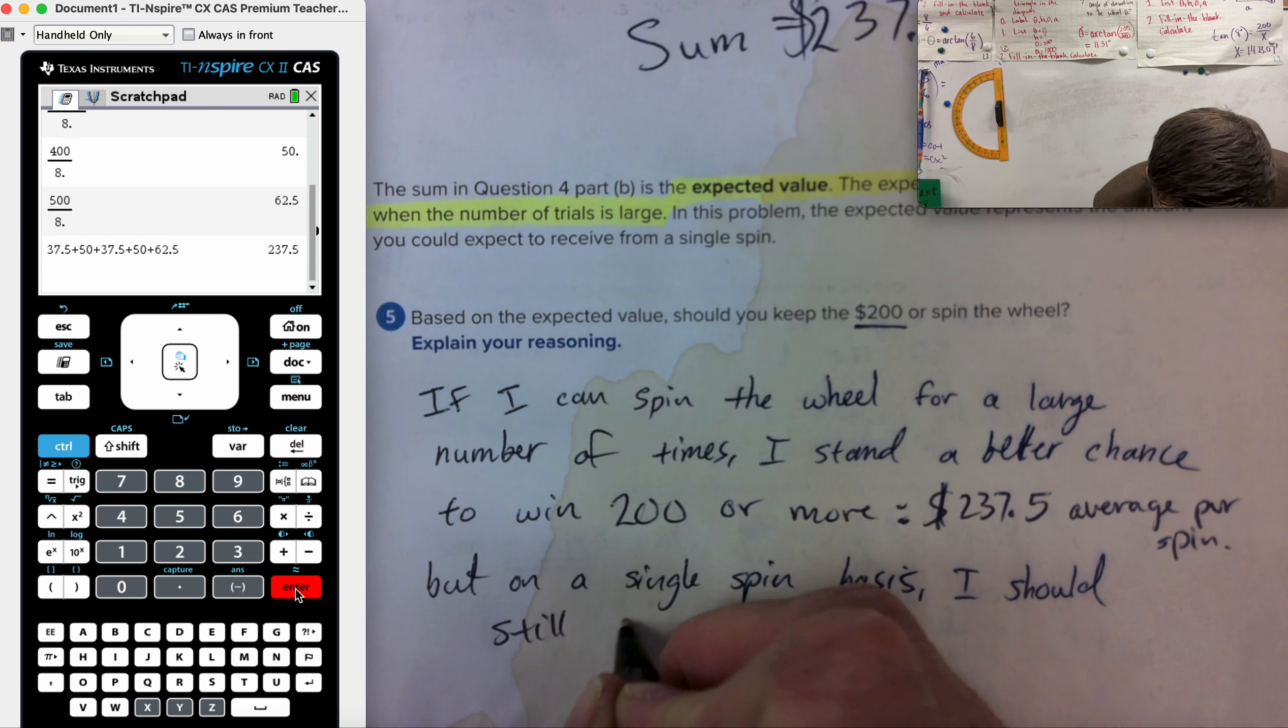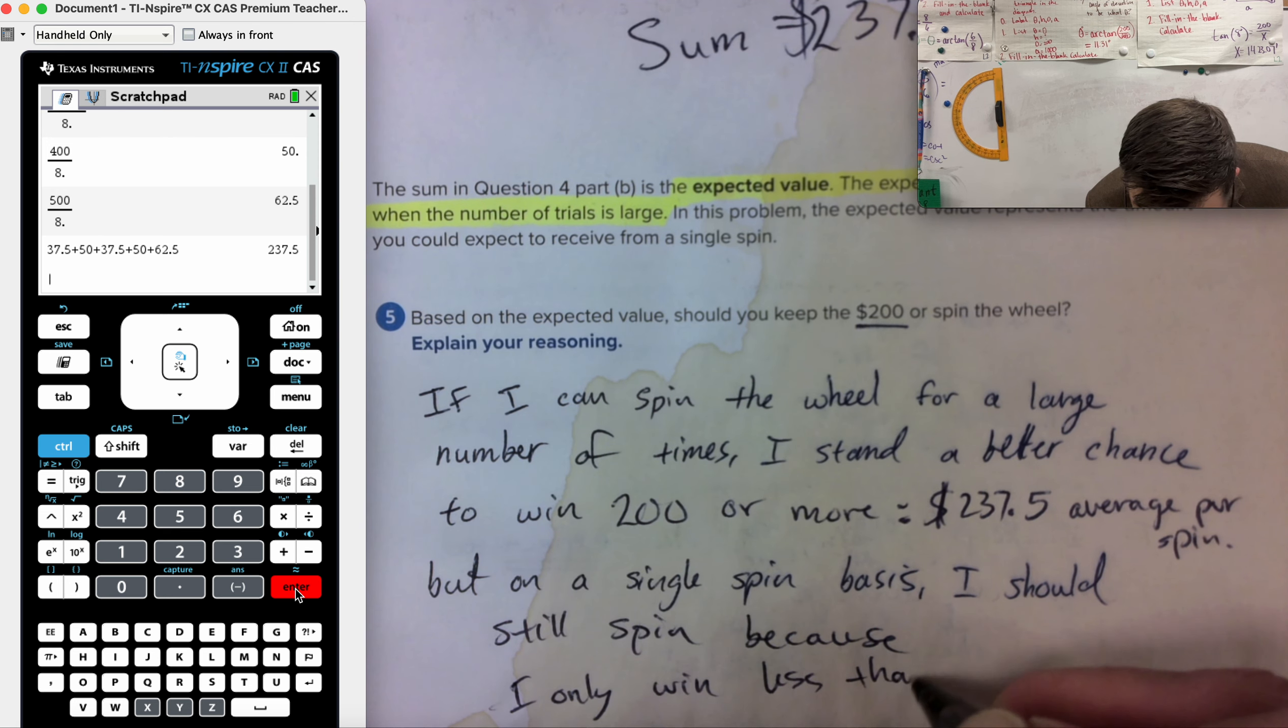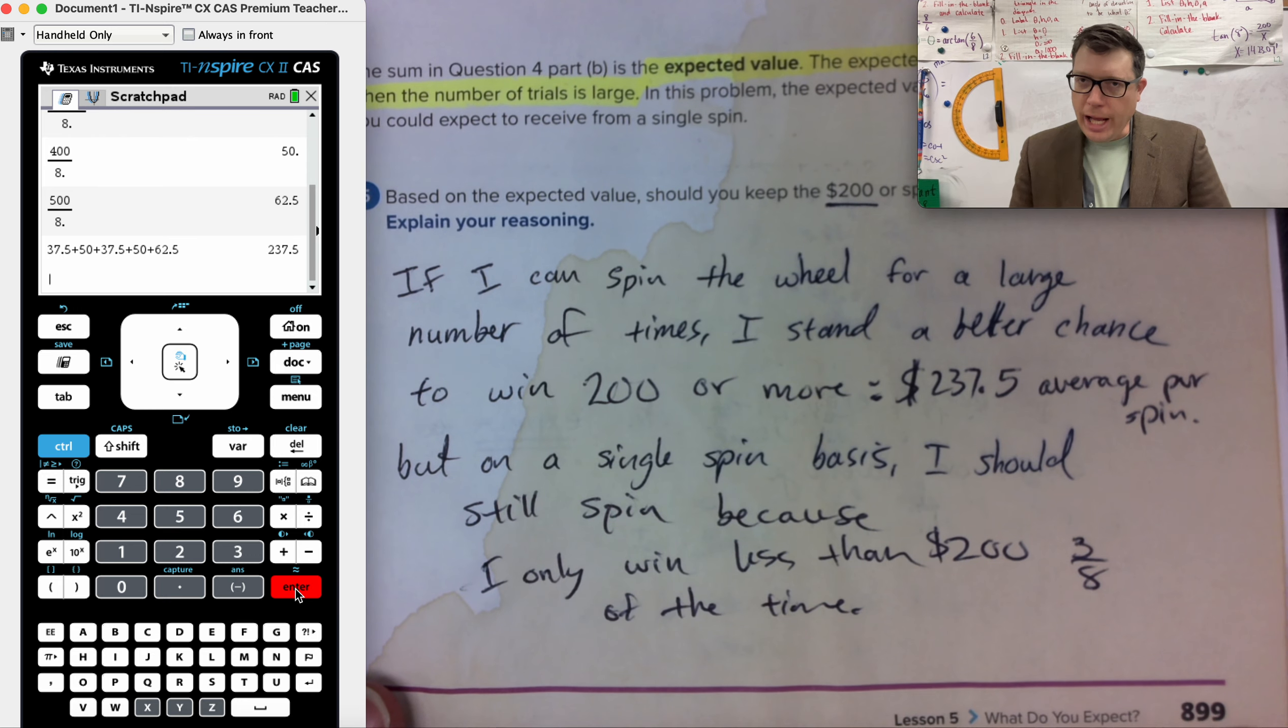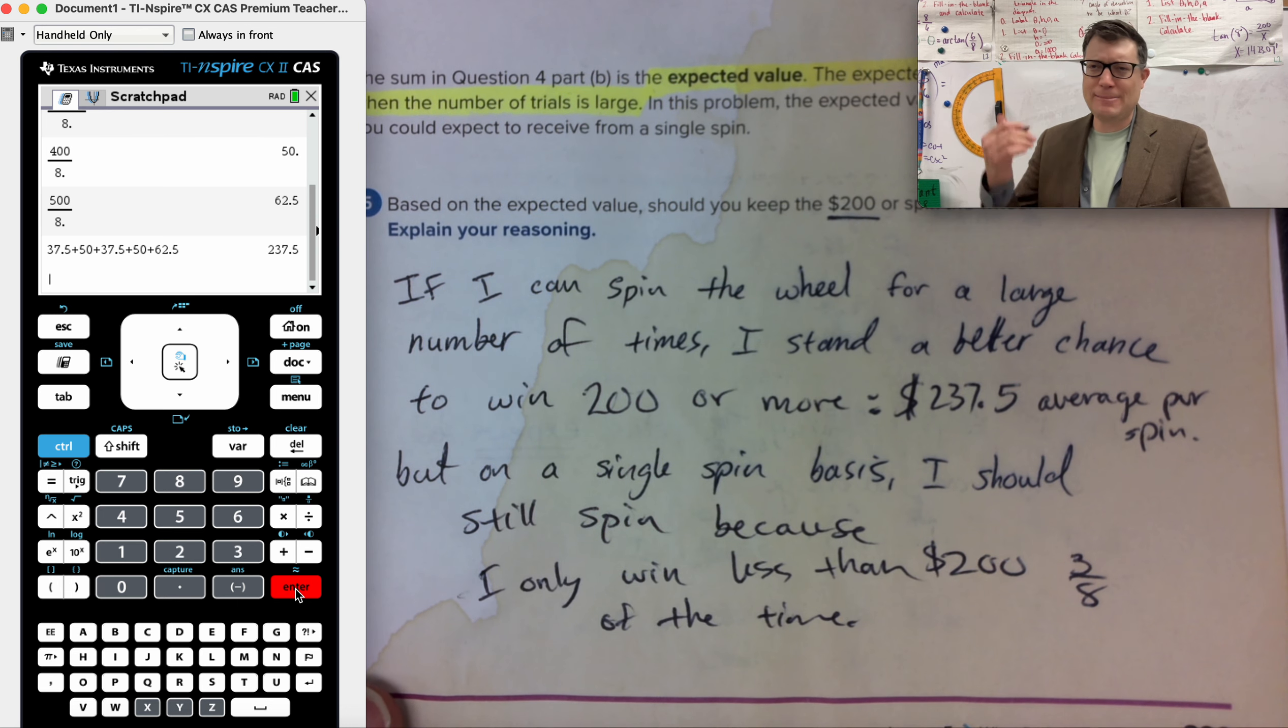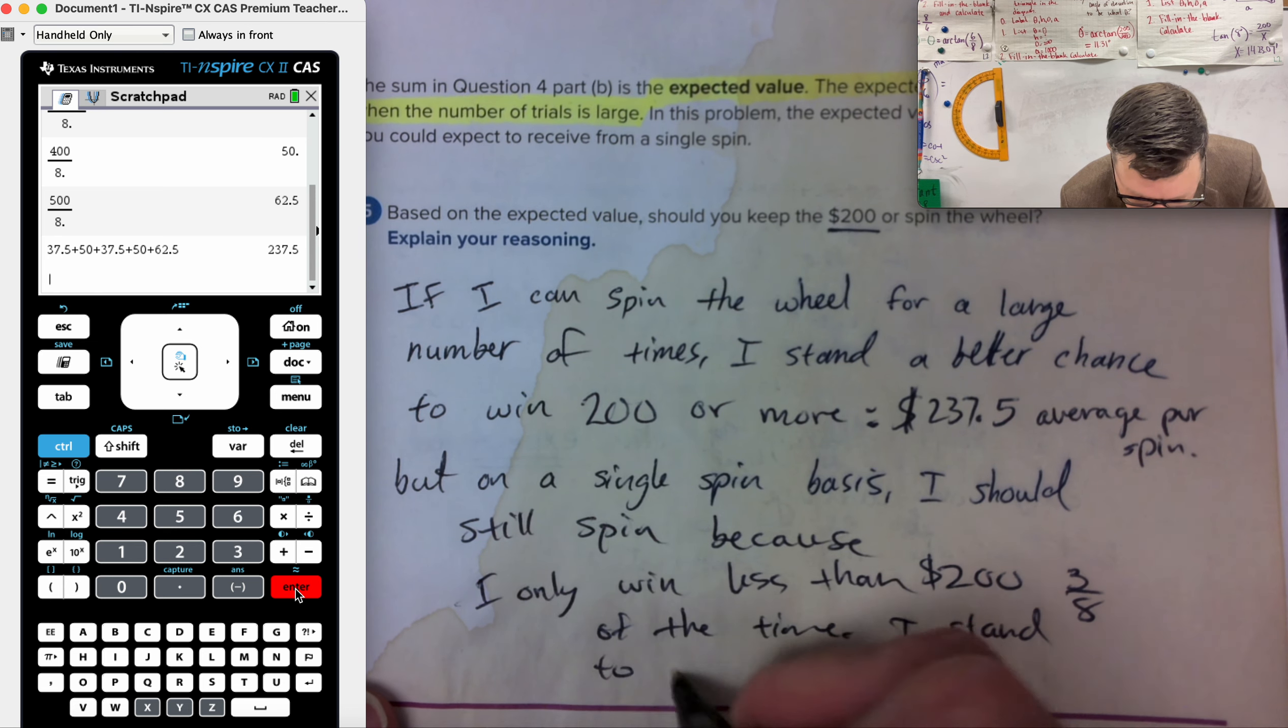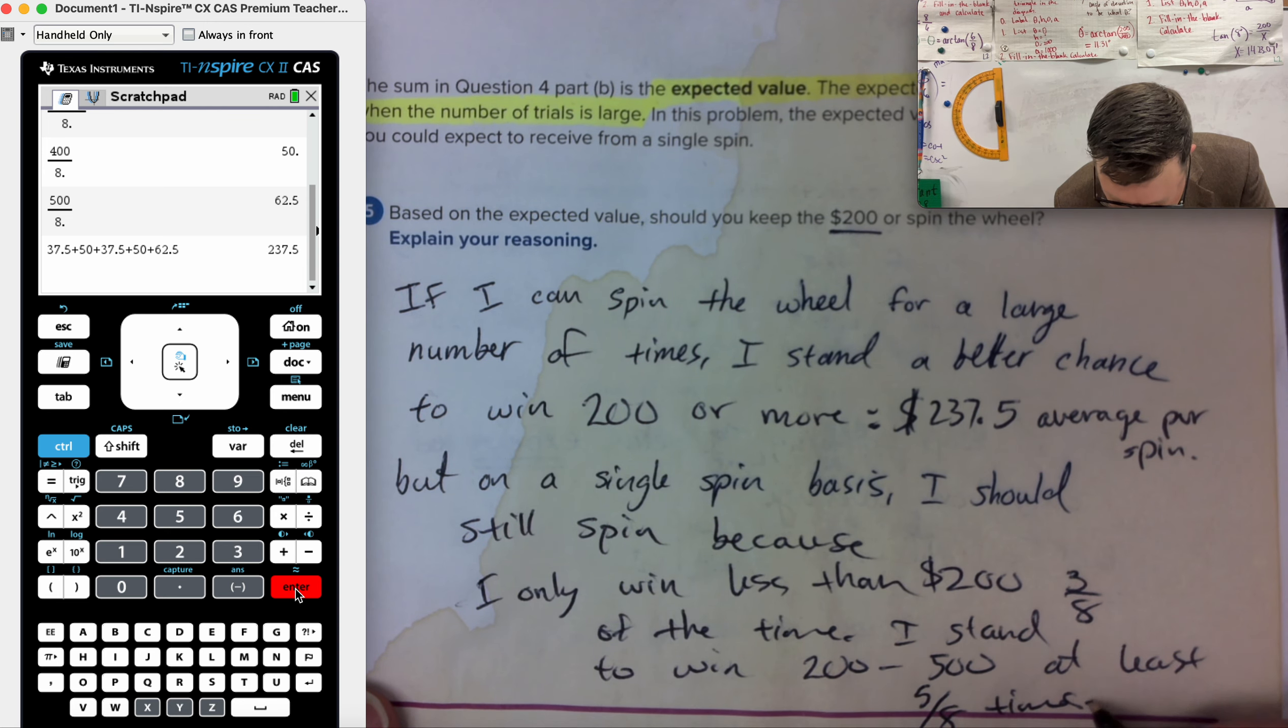However, on a single spin, just one, should I spin it? Well, yeah, I should still spin. Because I only win less than $200, three-eighths of the time. That's less than half. So if I'm winning less money than what I started with, less than half of the times I play it, absolutely. My chances of getting a good score this one time and winning 200 or more is much better. I stand to win 200 to 500 at least five out of eight times.